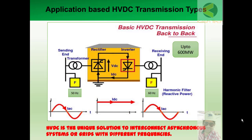Here you can see that one network is supplying power at 50 Hz whereas the other network is generating power at 60 Hz. If you want to connect these with an AC transmission line, it will not be possible because two different frequencies cannot be connected together. That is why the DC link is used here — AC is converted to DC, and then both can be connected together at the same voltage levels.